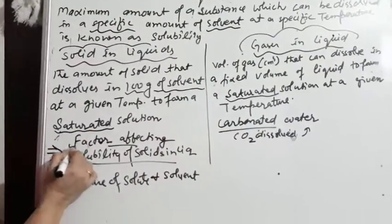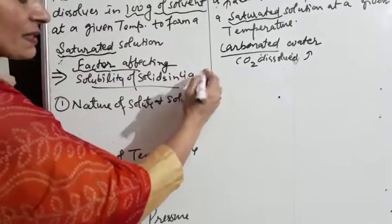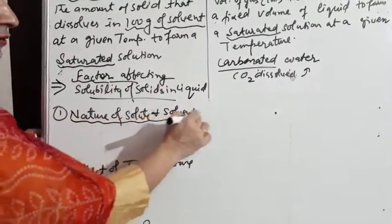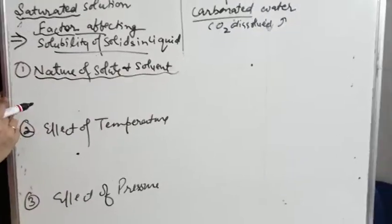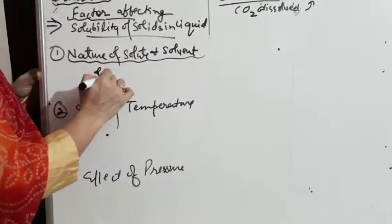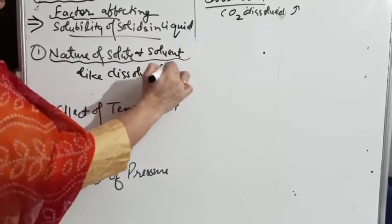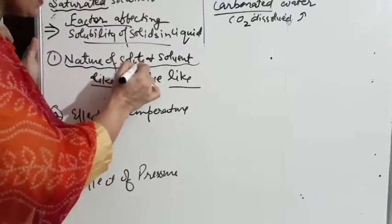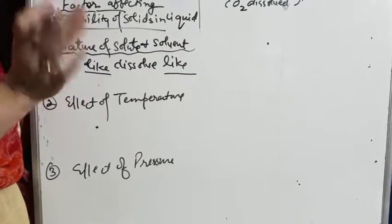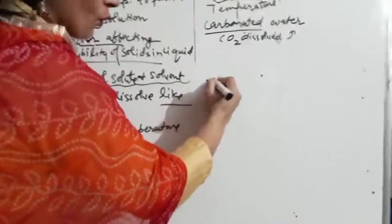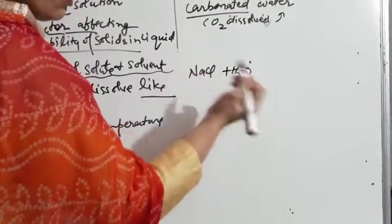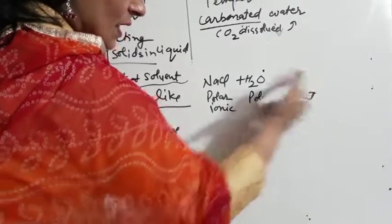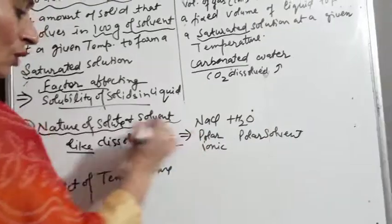Now let's look at factors affecting solubility of solids in liquids. The first factor is the nature of solute and solvent. Both follow a common rule: 'like dissolves like.' Whatever is similar in nature will dissolve in each other. For example, sodium chloride dissolves in water — because sodium chloride is polar and ionic, and water is also a polar solvent. These two easily dissolve in each other. This is the 'like dissolves like' concept.